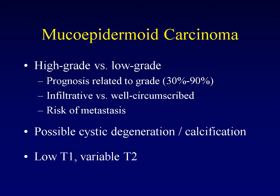These two different types of mucoepidermoid carcinoma also have different radiologic appearances. The high grade tumors tend to be infiltrative with poorly defined borders, whereas the low grade tumors tend to be well circumscribed. The risk of metastatic disease from mucoepidermoid carcinoma is high, such that even in the absence of radiologic findings, patients undergo neck dissections to look for occult metastatic disease. Mucoepidermoid carcinoma can calcify and can undergo cystic degeneration, although neither is typical.